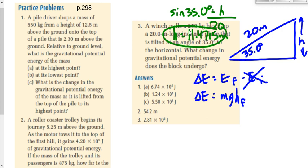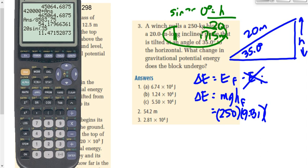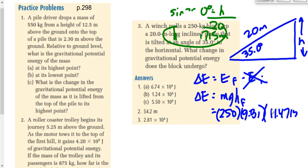So, we sub that in here now. We've got our mass here of 250 kilograms times 9.81 times the final height of 11.4715. And, when we do that, we should get 2.81 times 10 to the 4 joules.